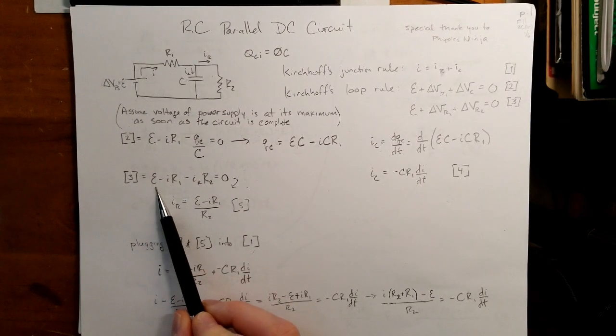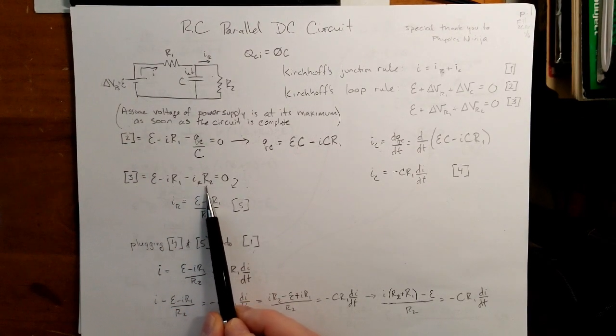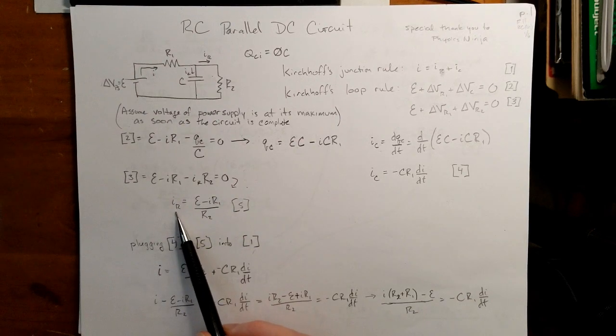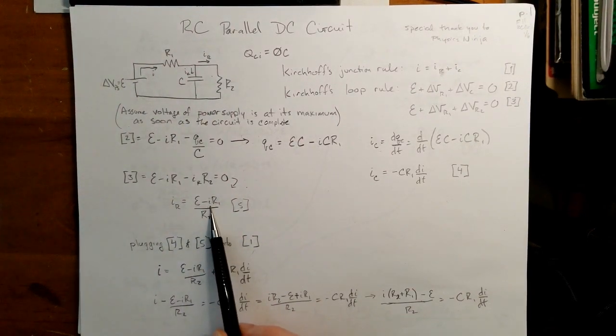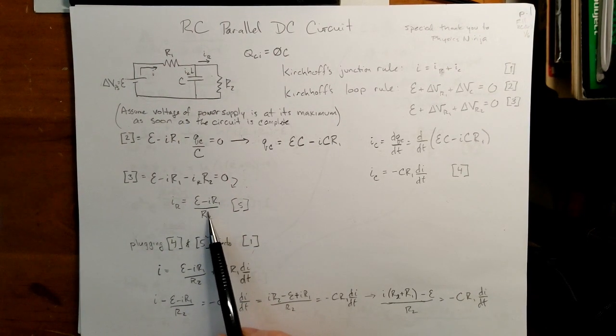Taking equation 3, epsilon minus IR1 minus I sub RR2 is equal to 0, and then solving for IR, we get this equation right here, that's just straight up, no calculus involved.